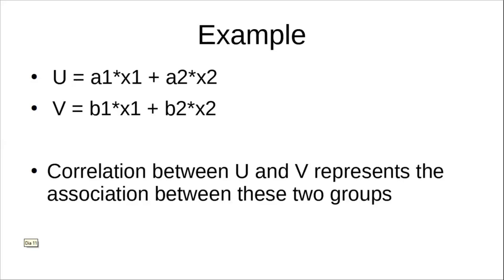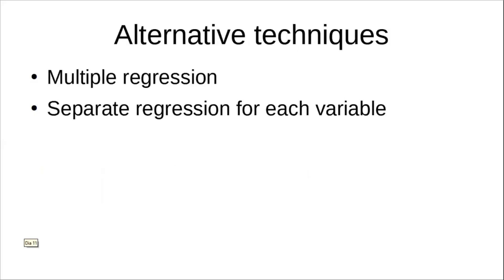There is a lot more to the theoretical background in terms of matrix algebra, which I won't get into here, but you can read through many textbooks for the details. As an alternative technique, you could use multiple regression, but you would have to perform separate regressions for each dependent variable and wouldn't be able to quantify how variability between the dependent variables is related.